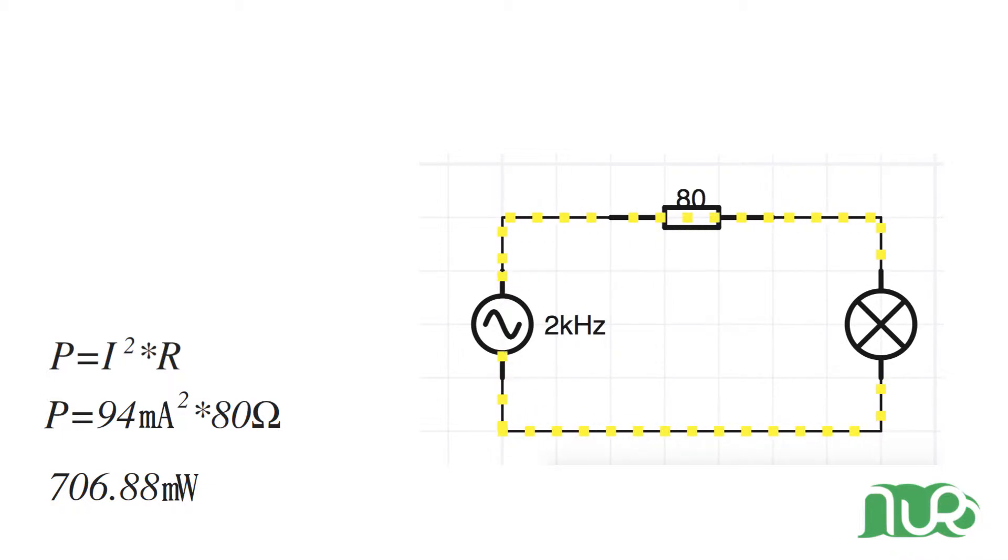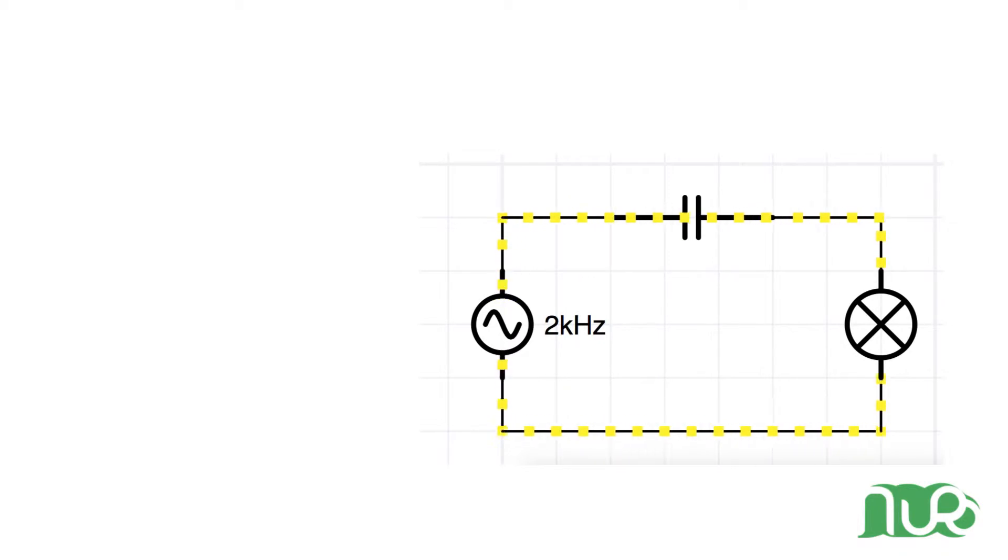Let's now change the resistor with a capacitor like this. Hey, the circuit still works as expected and even the current through the lamp remains the same. Why is it so? Well, let's now take a look at the reactance that is the other part of impedance.